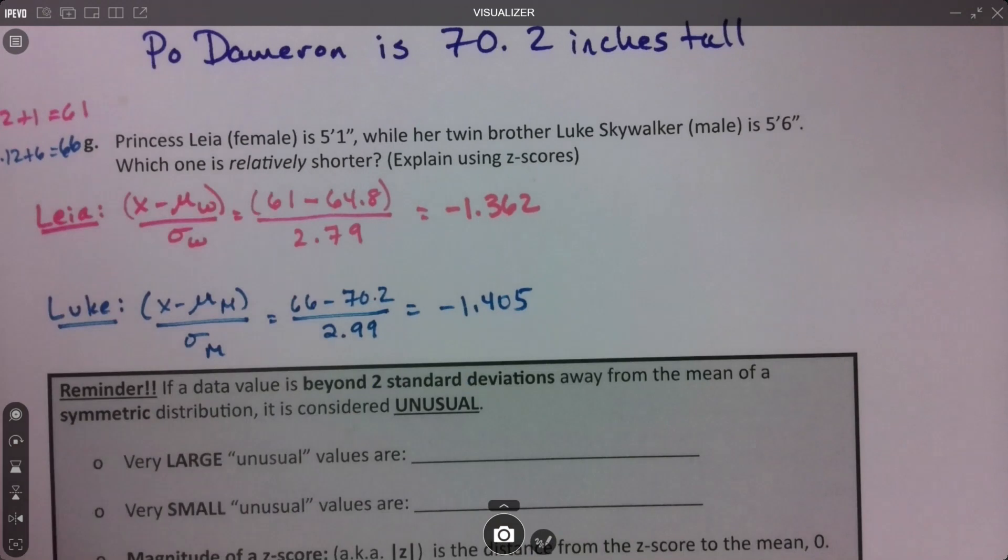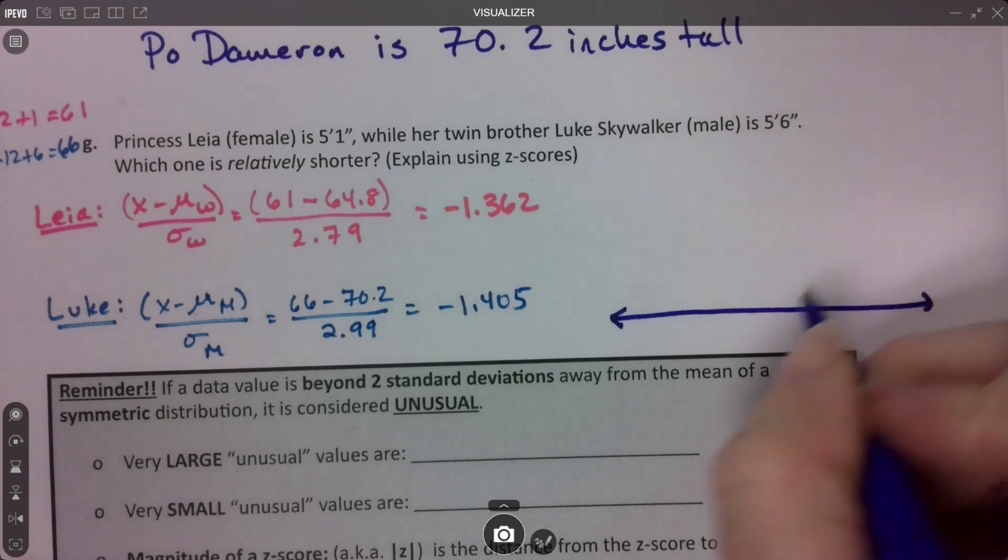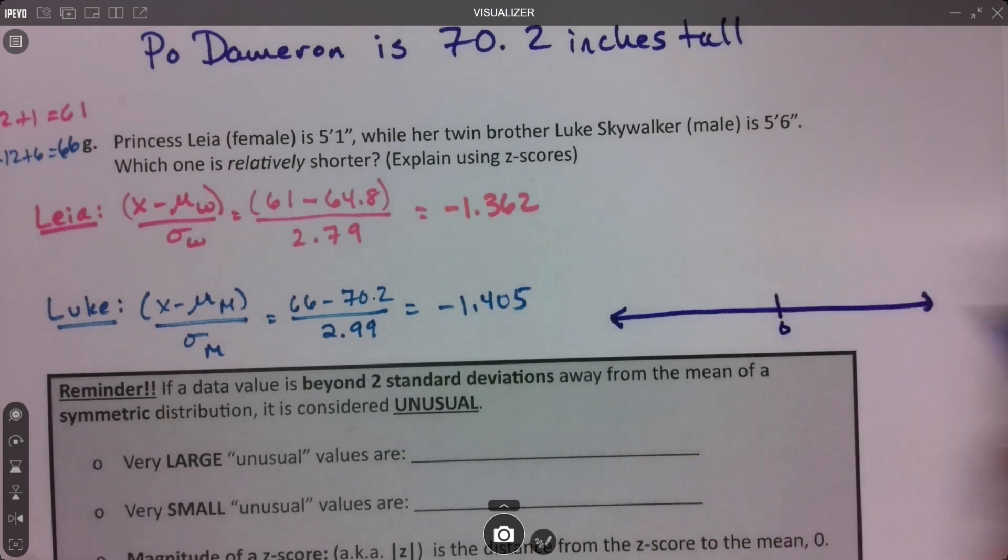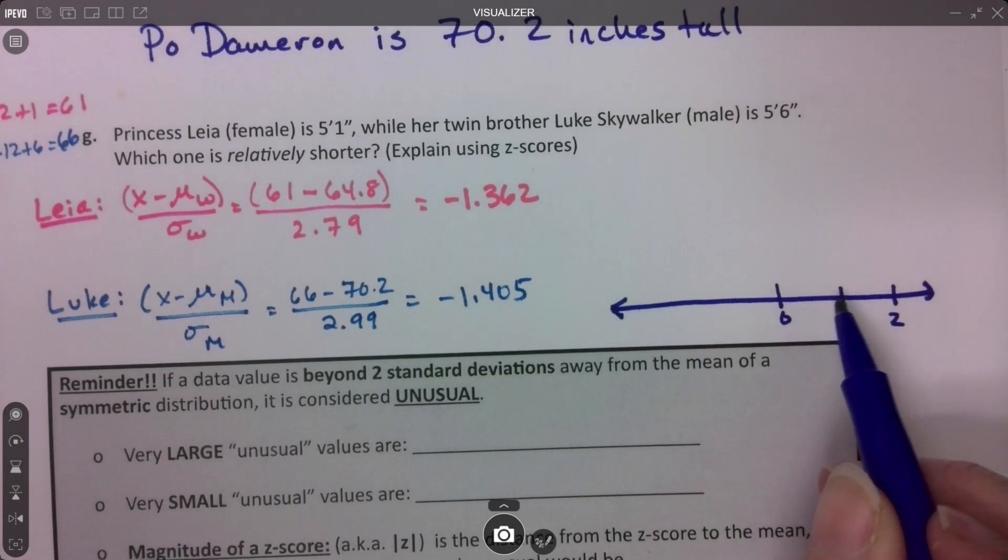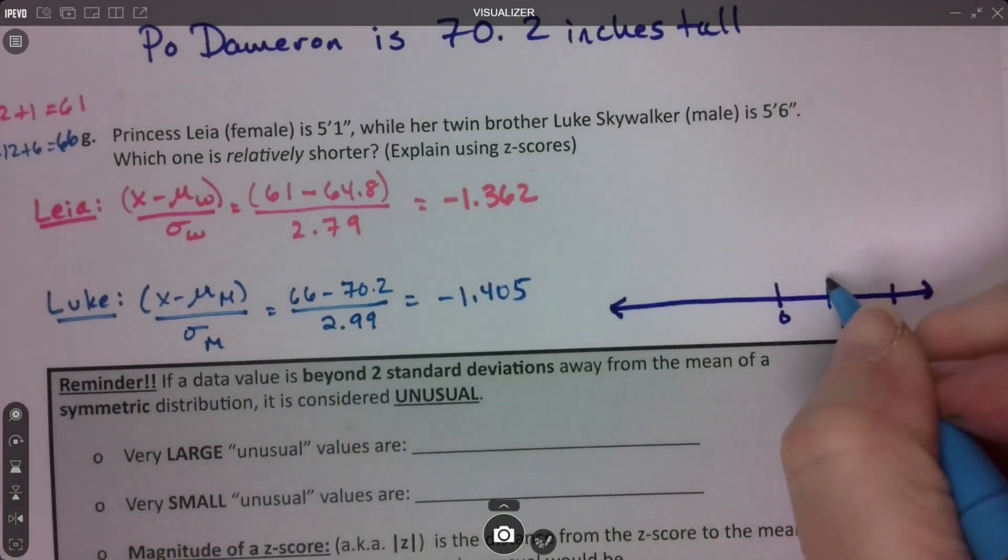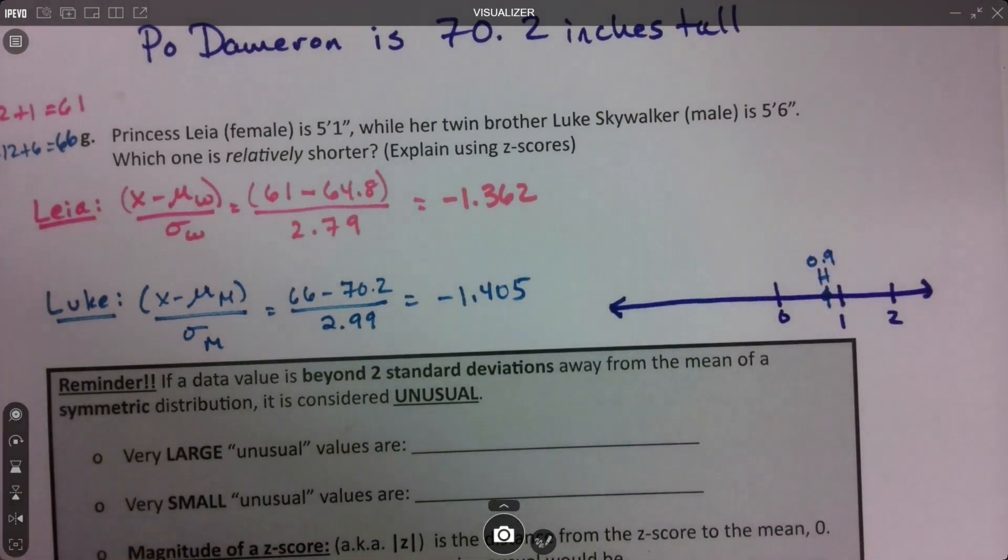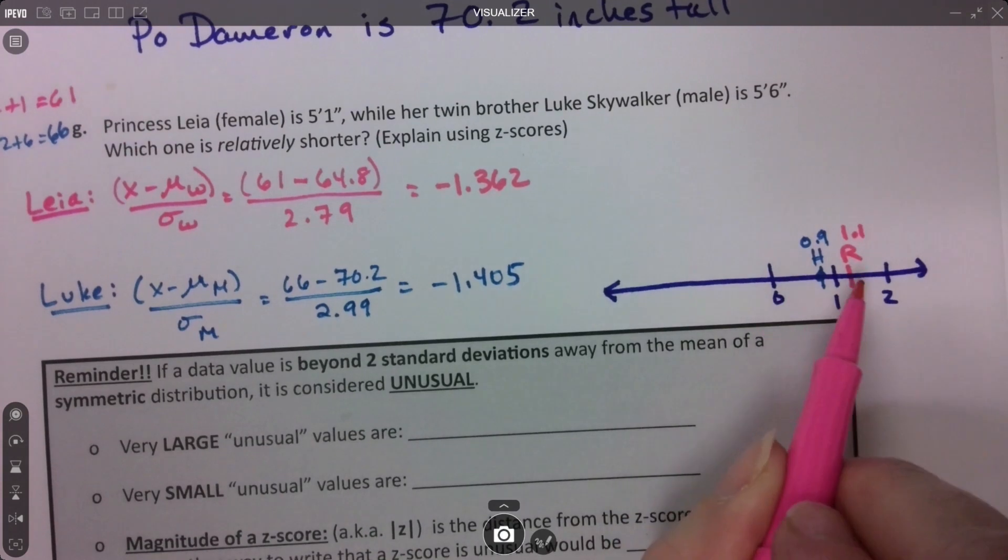Let's think about this on a number line. If I have a zero z-score, and I have heights for Han and Rey at 1 and 2, Han was just a little bit shy of 1, about 0.9. Rey was over here, about 1.14. So it's easier to see who was taller. She was, because she's farther to the right. She had the bigger number.